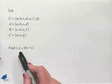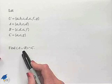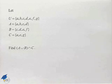We're asked to find A union B intersected with C. We're going to work within the parentheses first to find the union of A and B.